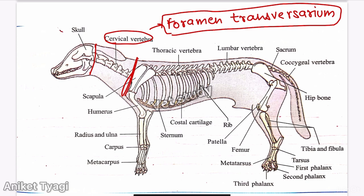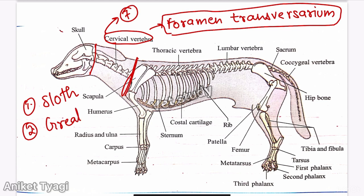The number of cervical vertebrae is almost fixed at 7 in almost all animals. Exceptions include the sloth, which has 6 cervical vertebrae, and the great anteater, which has 8 to 9 cervical vertebrae.